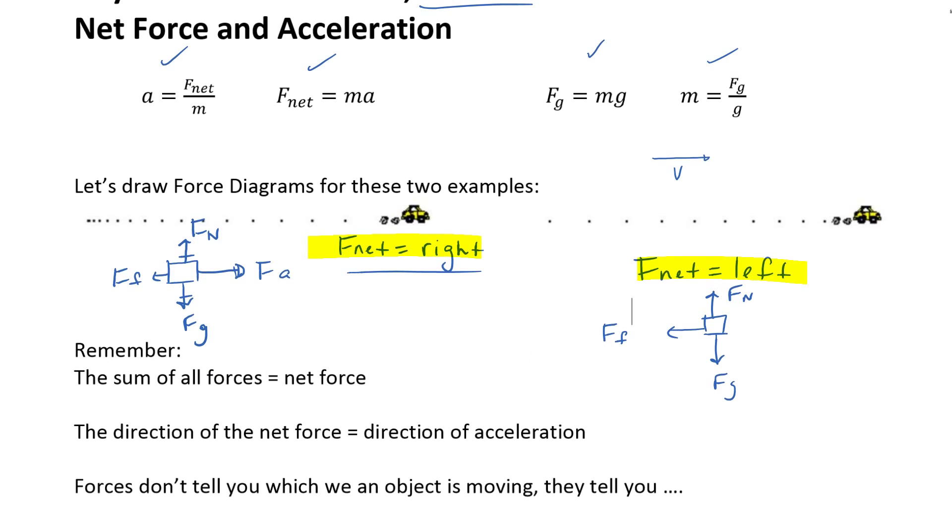So first of all F net means the sum of all the forces. So here there are four different forces and when we add them all together we end up with a net force to the right. Now in both of these examples the direction of F net, here F net is to the right and acceleration is to the left. So really what we can point out is that the direction of the net force is equal to the direction of the acceleration. Those are always going to be the same.